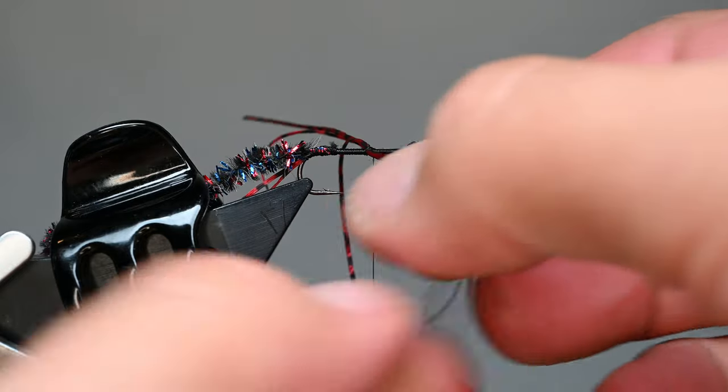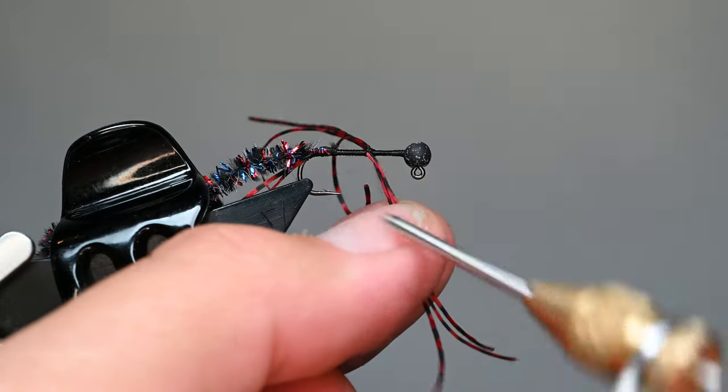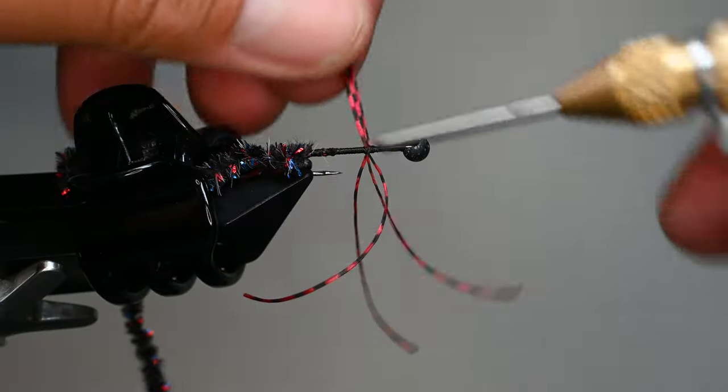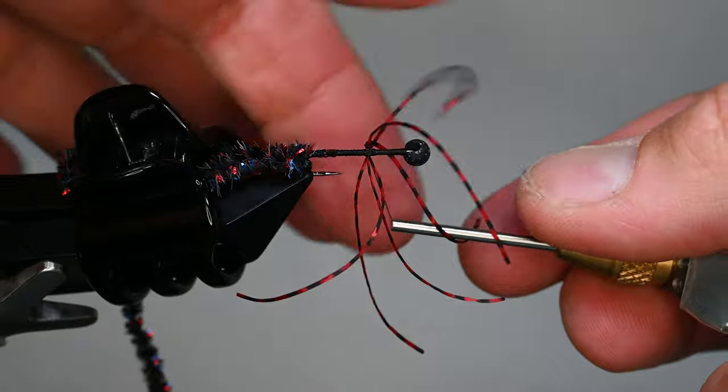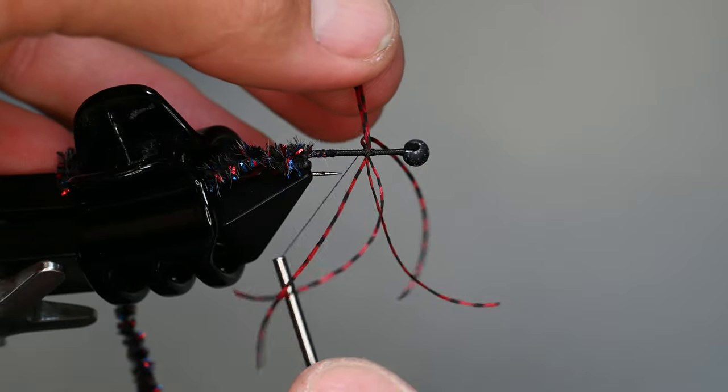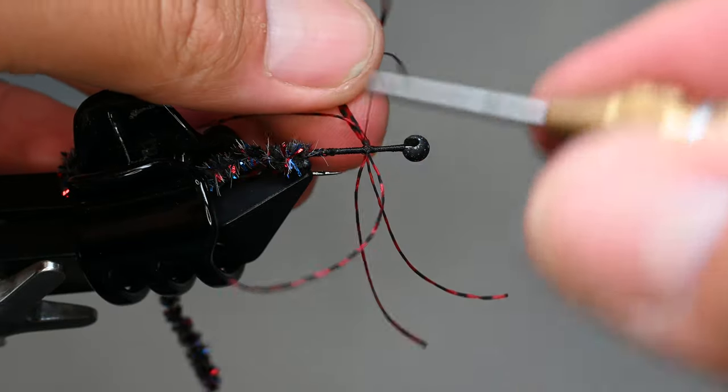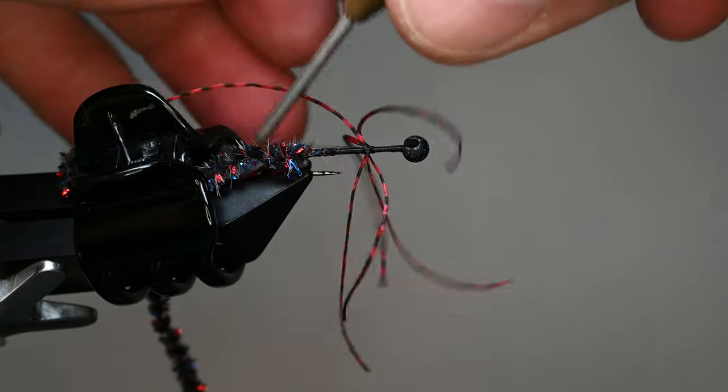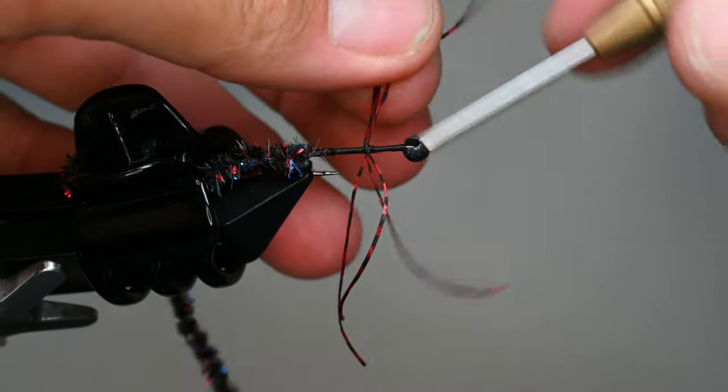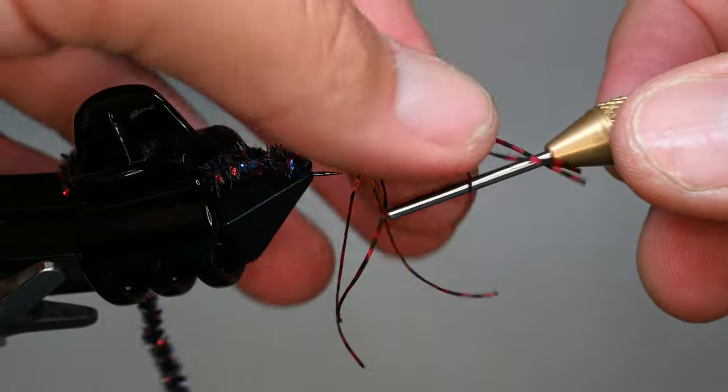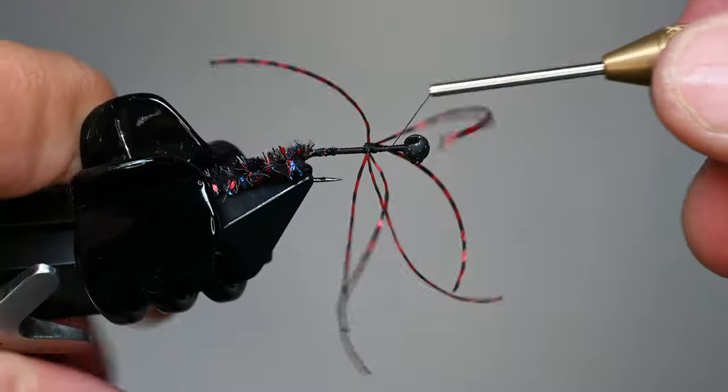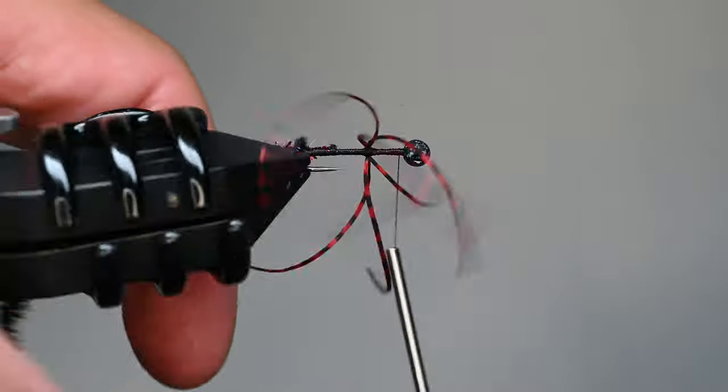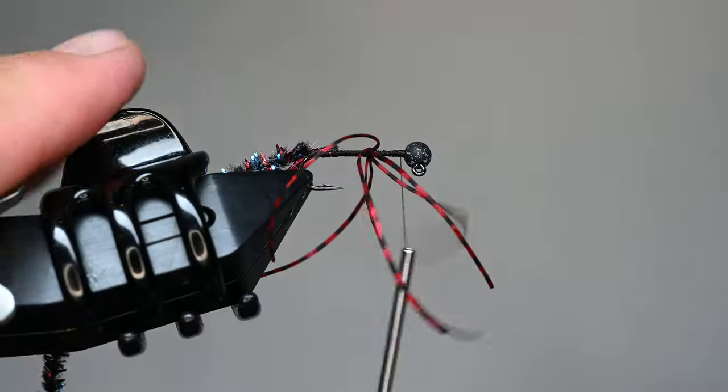Then advance our thread up to about two-thirds, so there's two-thirds from the tail to our thread and then about a third remaining forward with that bead. Then we're going to tie in our legs. Now I'm going to take three of the five silicone legs that we cut off and I'm going to tie them all in at once. I'm going to figure-V them around the threads so that they're aligned and basically tie it in on the top point.